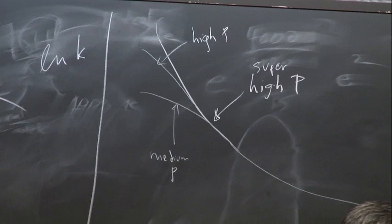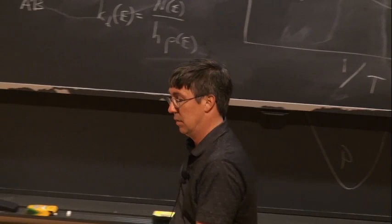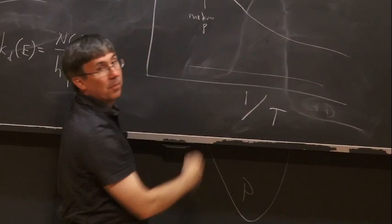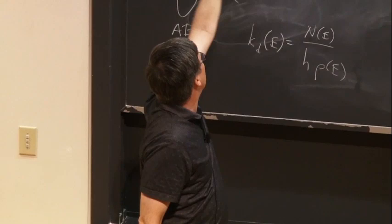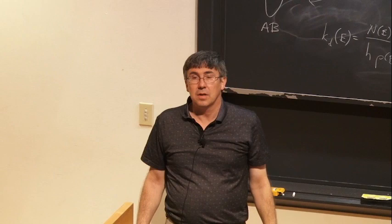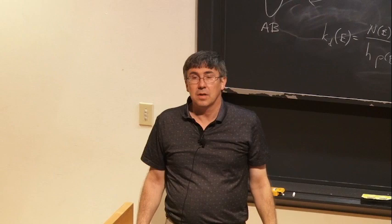What happens at really low pressure — if I run this reaction in a vacuum? The rate will basically go to zero. Because A and B still hit each other, but all the molecules that are formed just come back. So the rate goes away. In the low-pressure limit, the rate is proportional to the pressure.